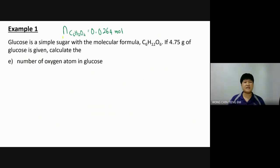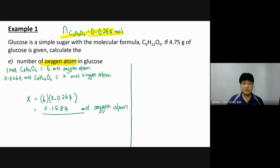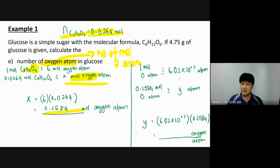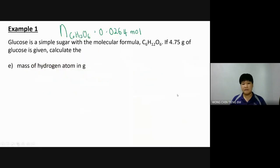Next part: number of oxygen atoms specifically. This asks for a specific element, so first find moles of oxygen atoms. In C₆H₁₂O₆ there are 6 oxygen atoms. Find the moles of oxygen atom, then compare with Avogadro's constant because the question asks for number of atoms. One mole of oxygen atom ≡ 6.02 × 10²³ atoms. I only have 0.1584 moles of oxygen atoms — cross multiply to get the number.